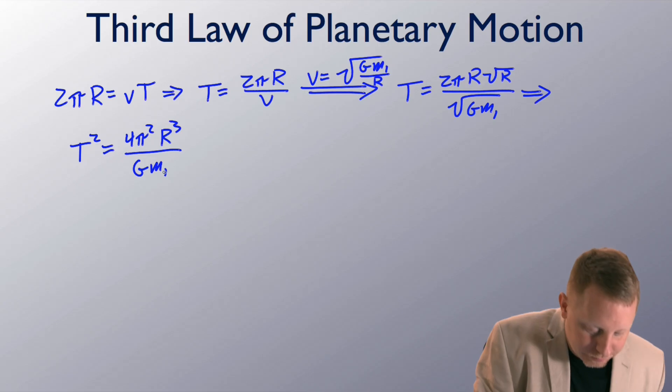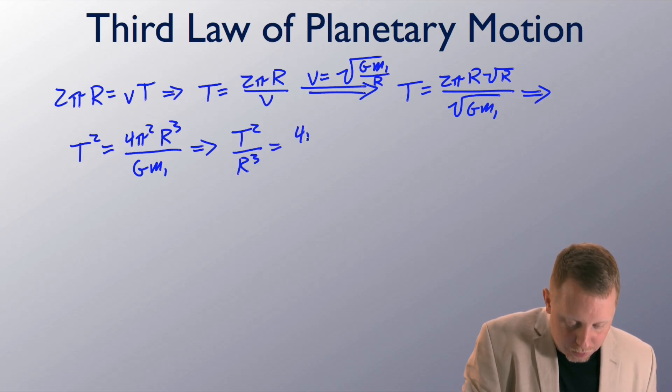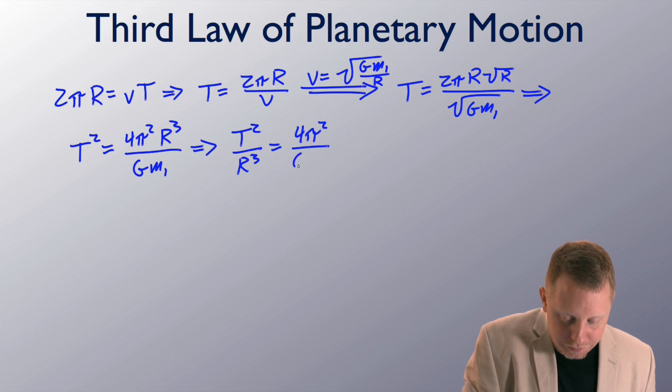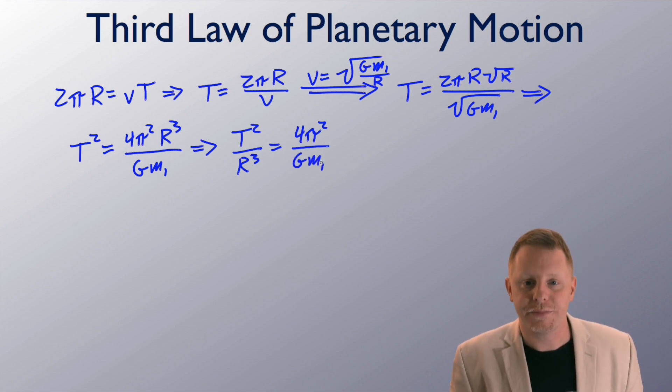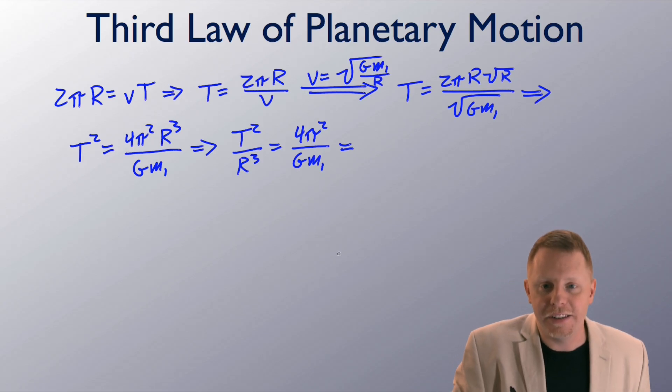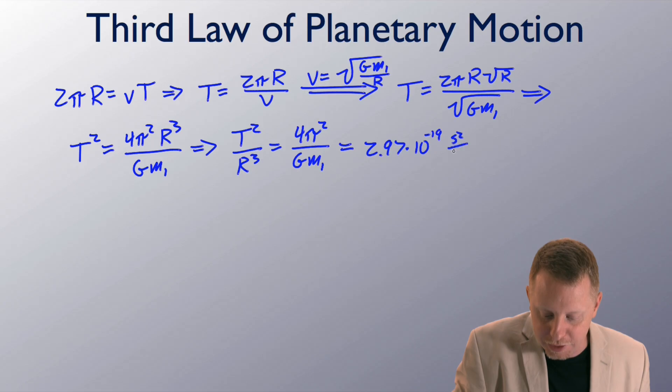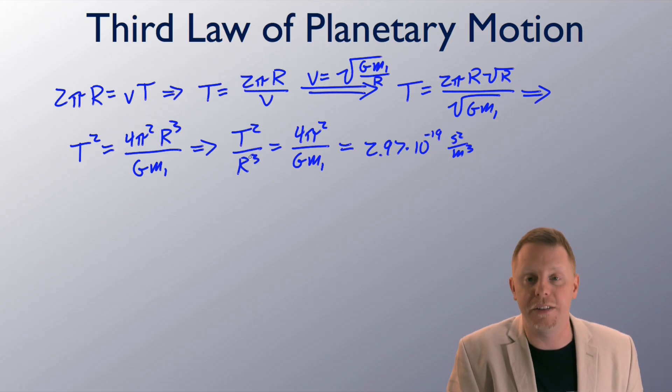Now, with just a little bit of rearrangement, t squared over R cubed, here's that ratio we were talking about, the square of the periods to the cubes of their orbital radii, is equal to 4 pi squared over G, m1. This is approximately equal to, assuming mass 1 is our sun, this is going to be approximately equal to 2.97 times 10 to the minus 19 seconds squared per meter cubed in our solar system. So we have an approximately constant ratio of the squares of the periods, to the cubes of their orbital radii, and here's the constant it's equal to.